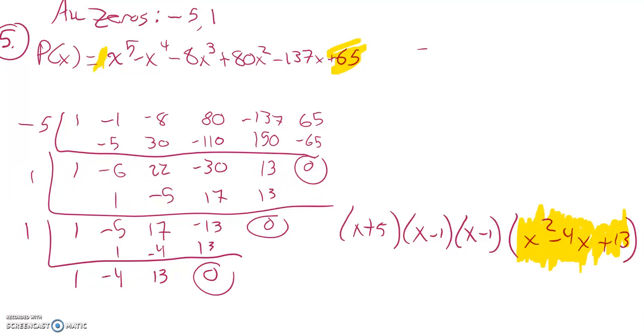Quadratic formula would be -b ± √(b^2 - 4ac) all over 2a. So -(-4) is positive 4. -4 squared is 16, and then I have -4 times 13, that would be 40 and 12 more, so 52. That's over 2.